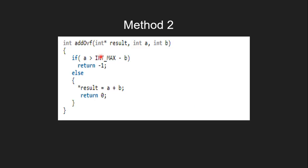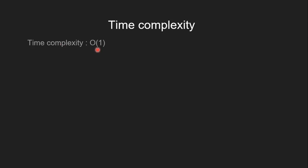In the function, first we find INT_MAX minus b to find the maximum value, and then we check if a is greater than INT_MAX minus b. If true, we return minus one indicating this will result in overflow. Else, we find the sum of a and b, store it into result, and return zero indicating there is no overflow. The time complexity of this approach is O(1) and the space complexity is O(1).